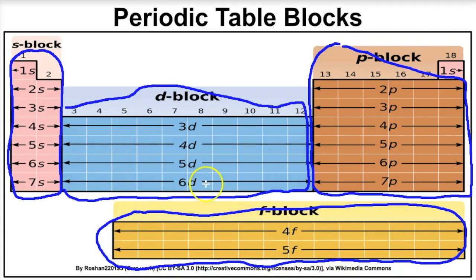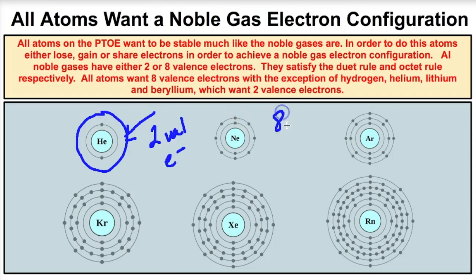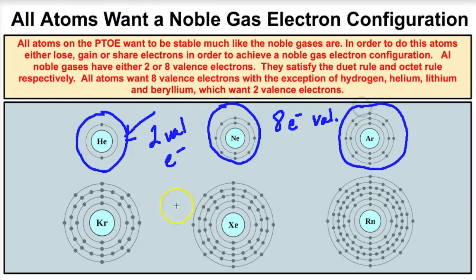Every single atom on the periodic table wants to have an electron configuration of a noble gas — they gain, lose, or share electrons to achieve this. Noble gases either have two valence electrons (helium) or eight valence electrons (neon, argon, krypton, xenon, radon). Hydrogen, lithium, and beryllium typically lose electrons to look like helium with two valence electrons, while all other atoms want eight valence electrons like the other noble gases.